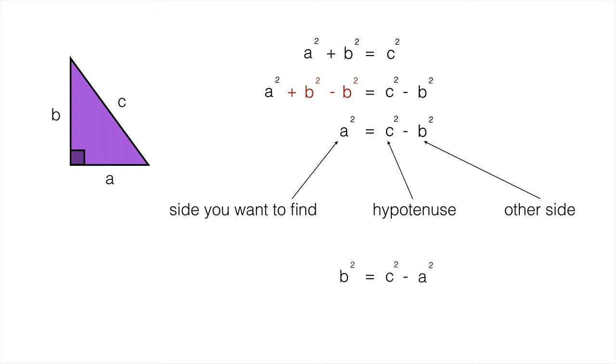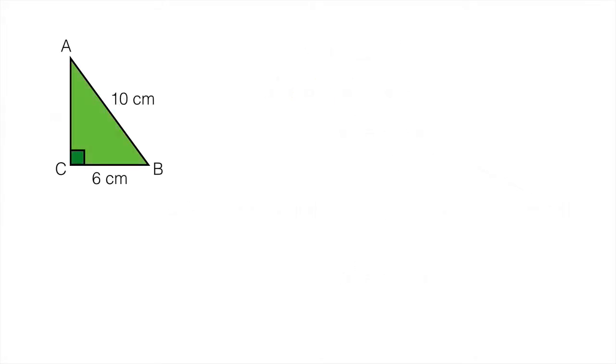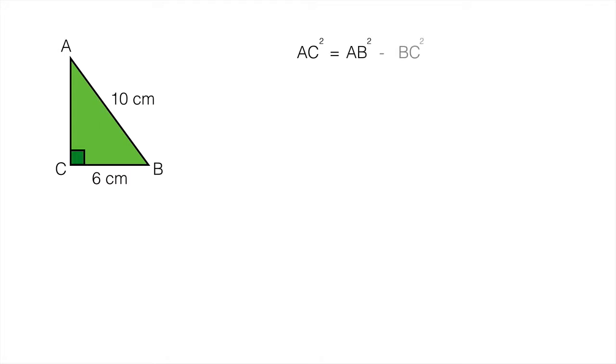Now let's apply that to a question. I've got a triangle here, ABC, and I need to find the length AC. So I start with AC² equals. Now it's going to be equal to the hypotenuse which is AB² minus the other side BC².